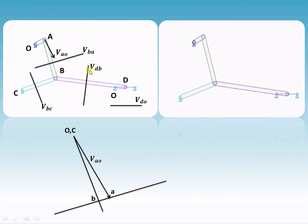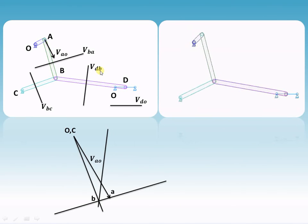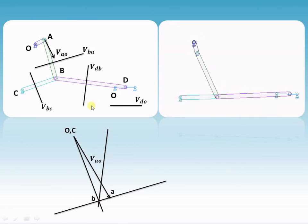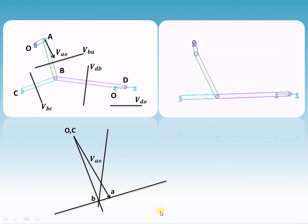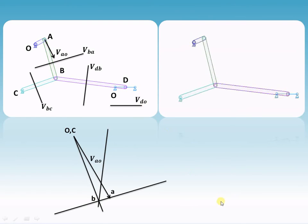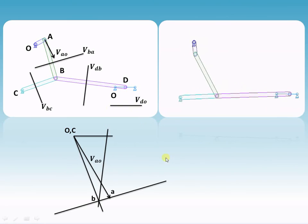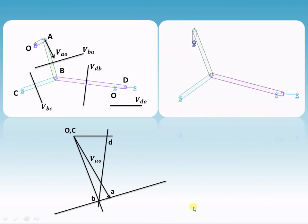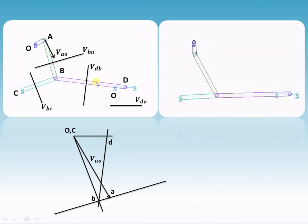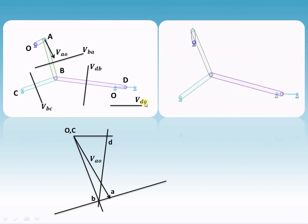Then for the next vector, velocity of D with respect to B: out of D and B, point B is known, so from point B draw a line parallel to this particular link. Finally, for velocity of D with respect to O, point O is known, so from O draw a line parallel to the horizontal vector. The point of intersection of V_DB and V_DO gives us point D.